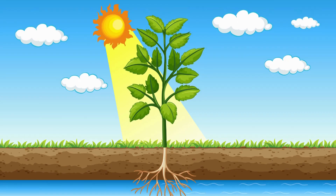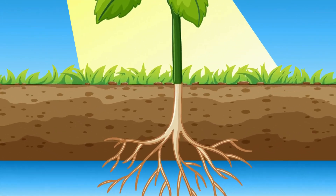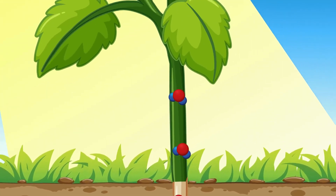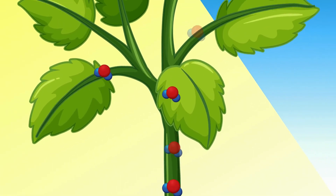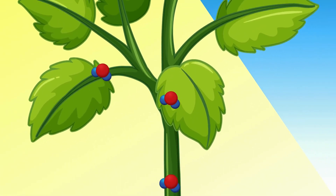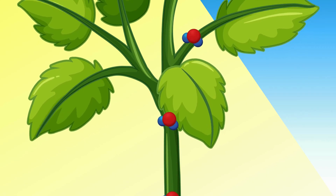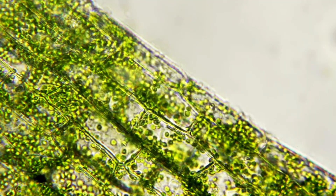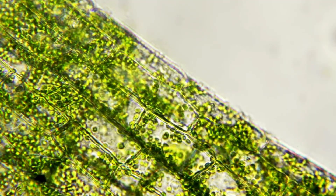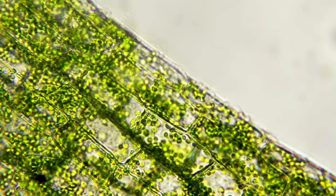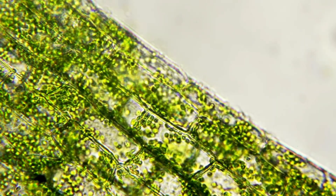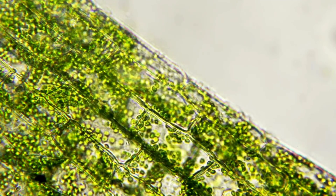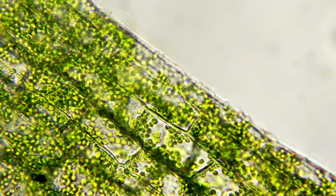Water is another essential ingredient in photosynthesis. Plants absorb water from the soil through their roots, which then travels up through the plant's vascular system to the leaves, where it is used in the photosynthesis process. Within the chloroplasts, water molecules are split into oxygen, protons, and electrons during a process called photolysis. The oxygen is released as a byproduct, while the electrons and protons are used in producing glucose.